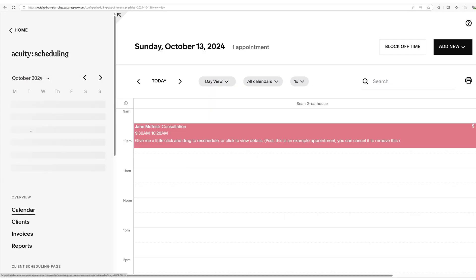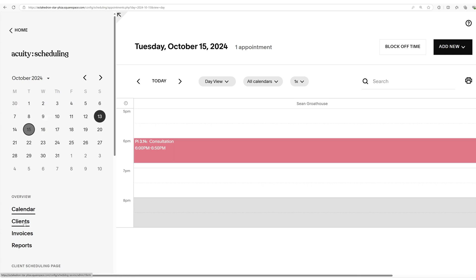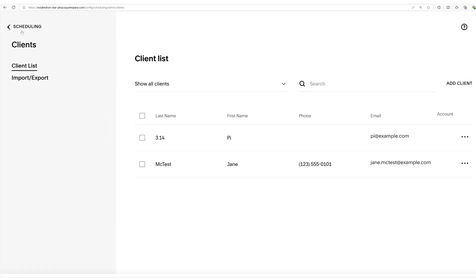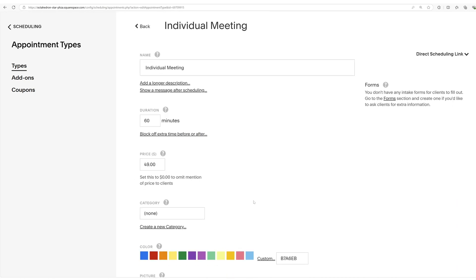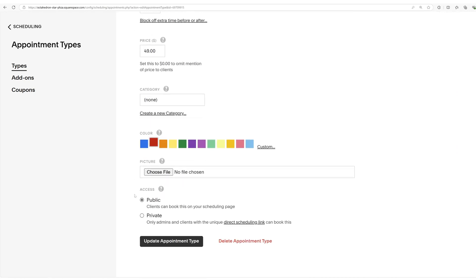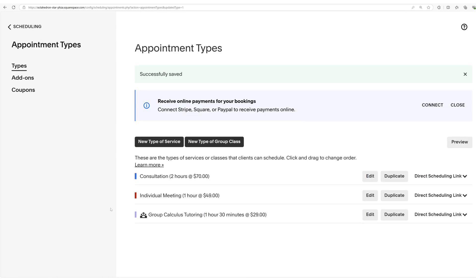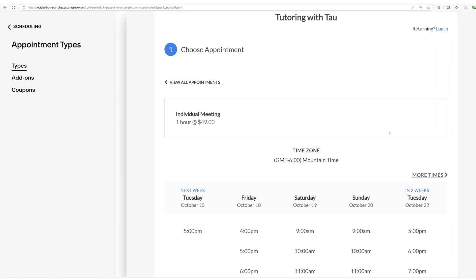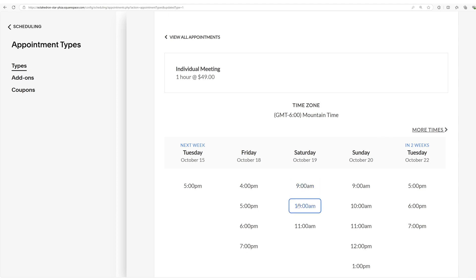Need to book clients for consulting or tutoring? Squarespace's acuity scheduling makes it easy to manage appointments, accept payments, and send automated reminders, all in one place. Plus, Squarespace's email campaigns make it easy to stay connected with your audience, whether you're promoting services or sharing updates.